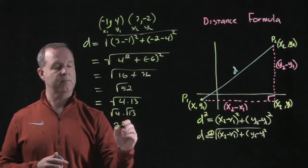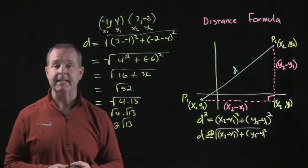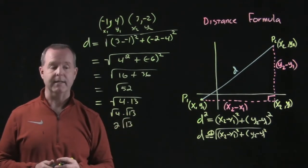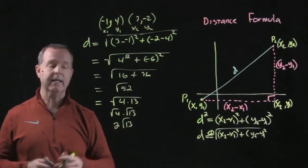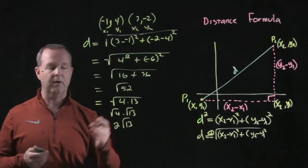And I can break that up as the square root of 4 times the square root of 13. The 2 pops out. And so the distance between those two points, whatever units I'm using, is 2 root 13. If I wanted to use a calculator and get an approximation, you're more than free to do that as well.